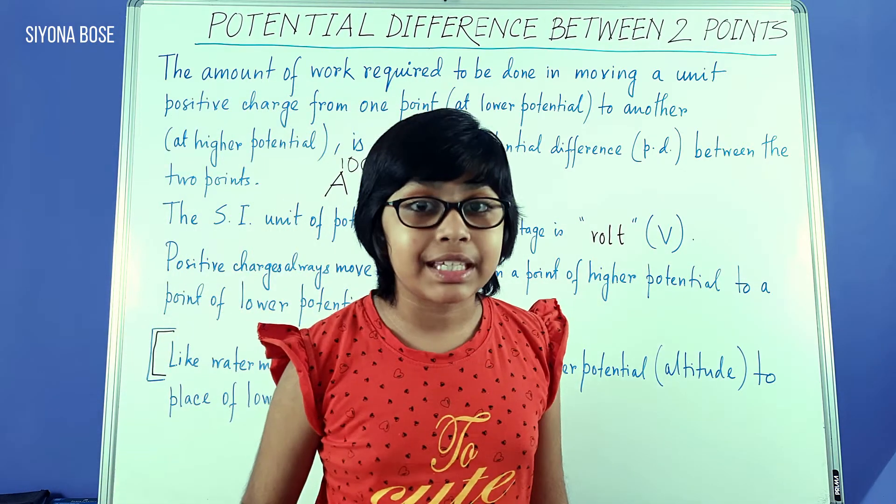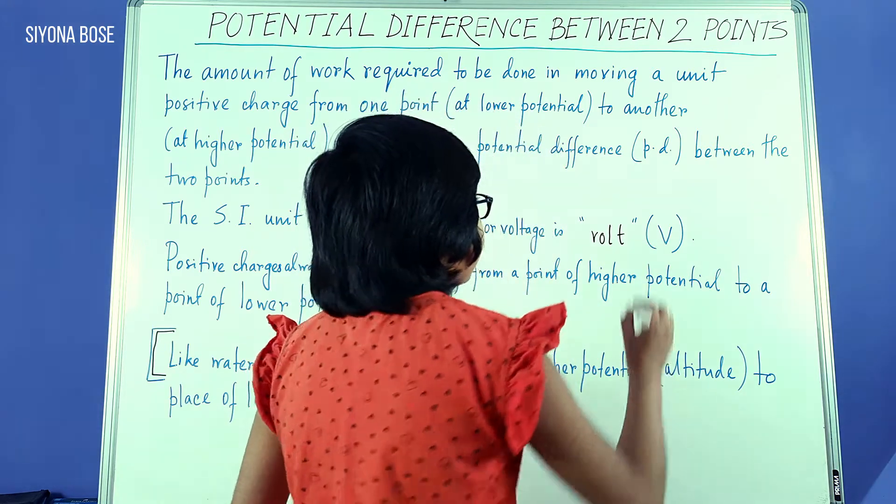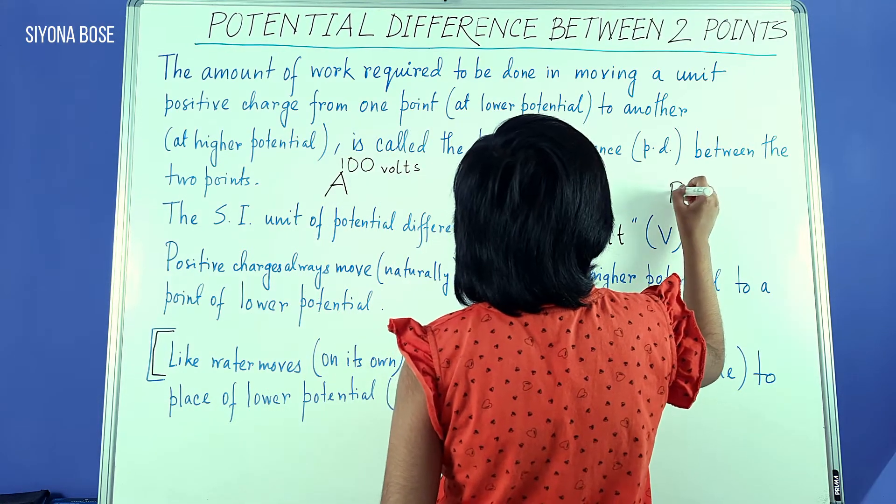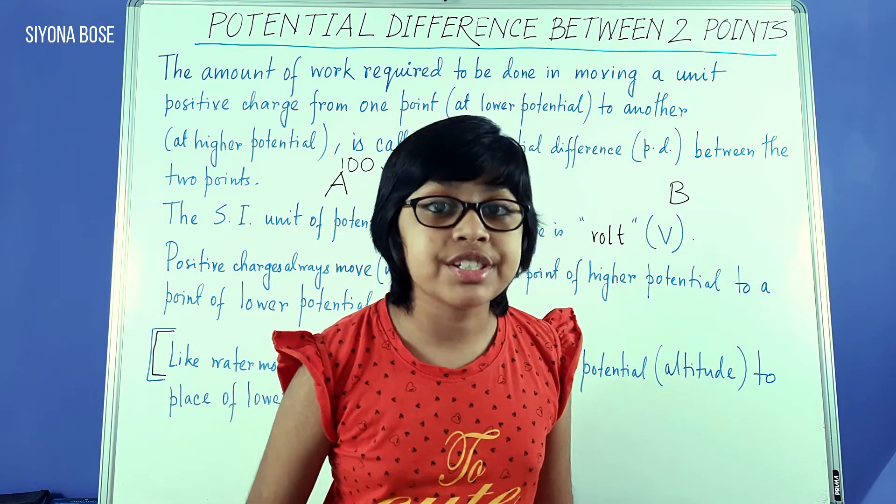Now, take another point B. B is another point in the same electric field, let's say, I'm making it here. B has 110 volts of electrostatic potential.